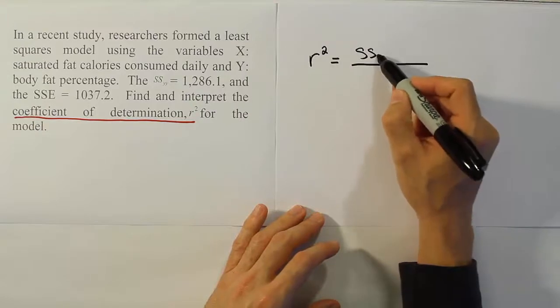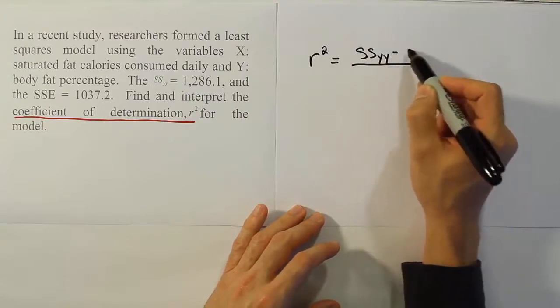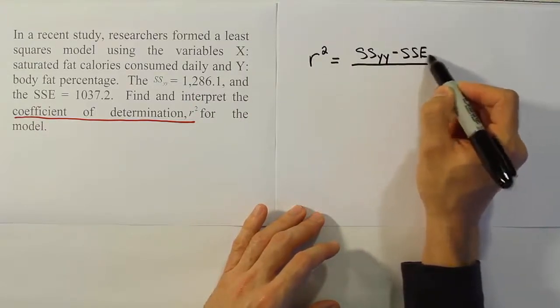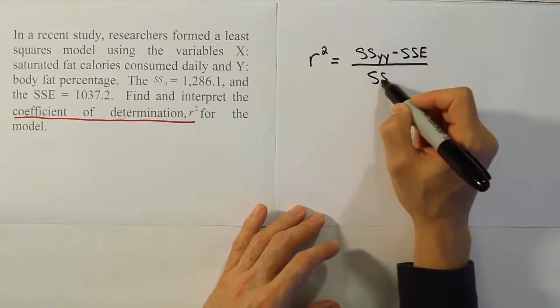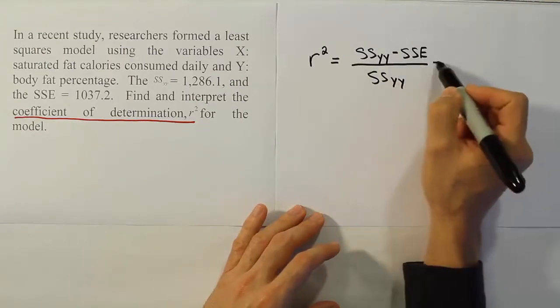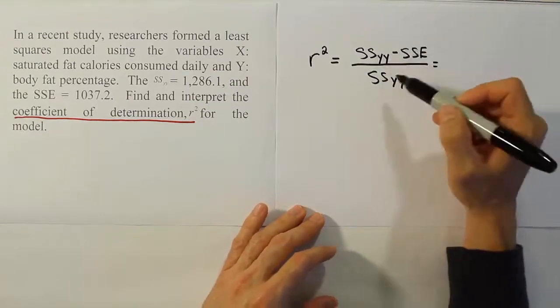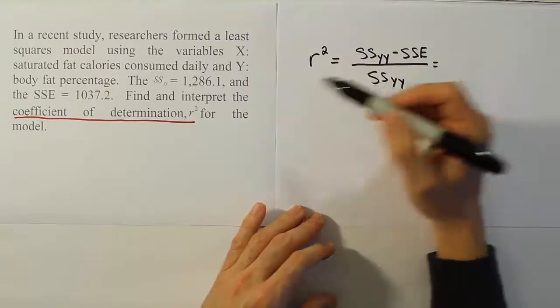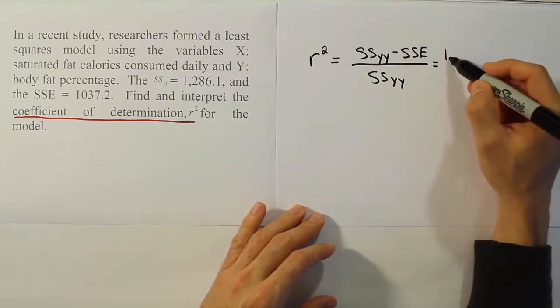It turns out they're just the things we need, because in order to calculate R squared, we have to do the sum of squares for YY, minus the sum of squares for error, divided by the sum of squares for YY. So if we have these values, we can just plug them in directly.